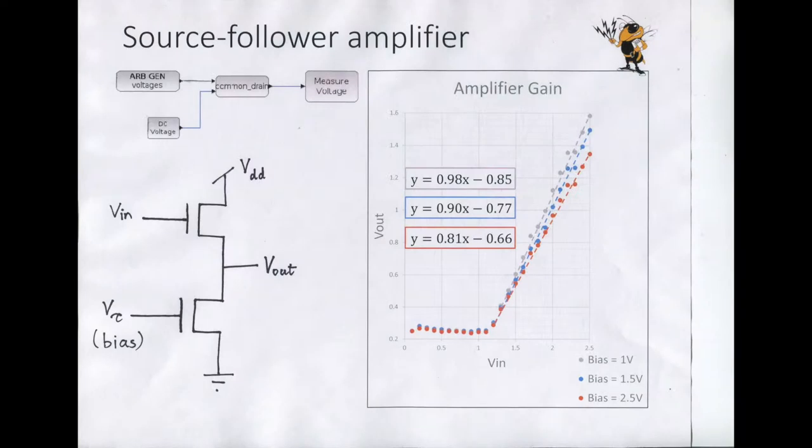After completing a regression analysis, we worked on some simple transistor circuits. We built a source follower amplifier using the block diagram that we can see on the slide. And we changed the bias voltage and we realized that as the bias voltage went up, the amplifier gain was seen to drop.